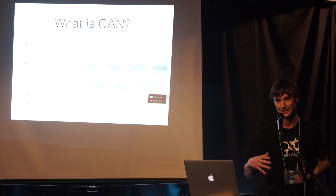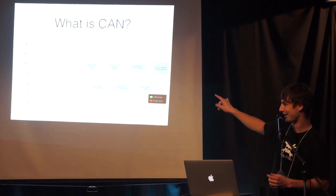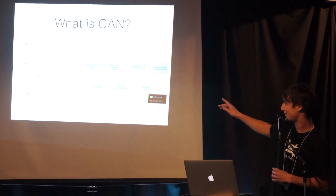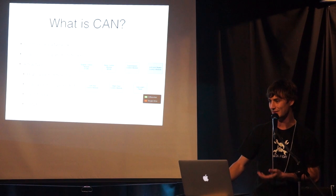What does a CAN bus look like? It's a network of controllers. You'll have a bunch of controllers on the high speed bus — in this case an engine controller, a body control module handling lights and power windows, a transmission control module for the automatic transmission, and an anti-lock brake module. There's a gateway on the body control module that goes to a low speed bus for convenience features like power seats and power locks.